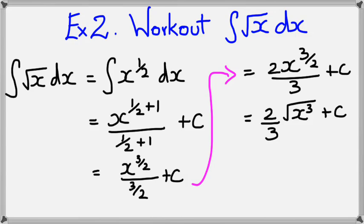So it'll be 2 thirds square root of x cubed plus c. Okay, you do not need to simplify it all the way to the end. You can actually leave it around the part right here and you'd still be correct.